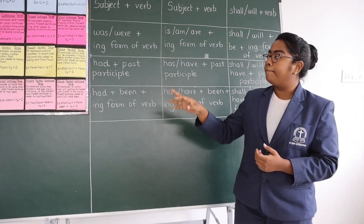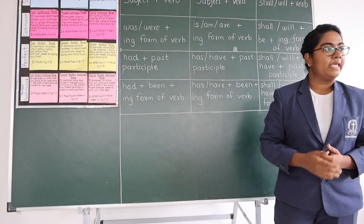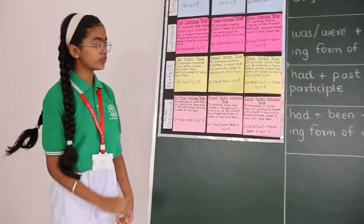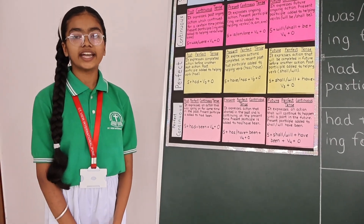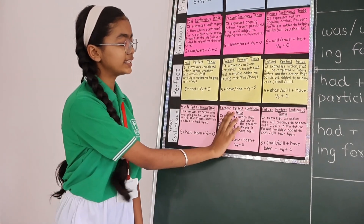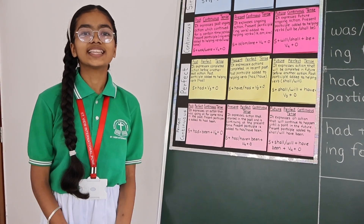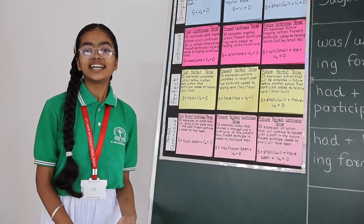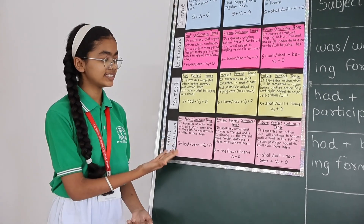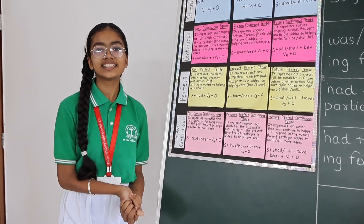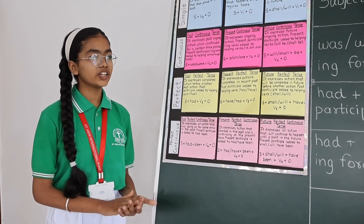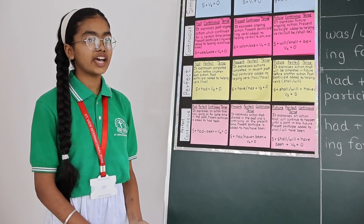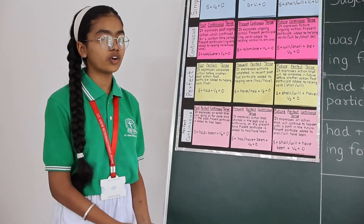Who is ready to give the examples for perfect continuous tenses for past, present, and future? Siti, come ahead. Example of past perfect continuous tense is: had you been waiting for me. Example of present perfect continuous tense is: had you been waiting for me. Example of future perfect continuous tense is: next year I will have been working for two years.